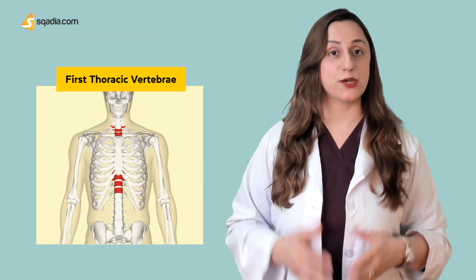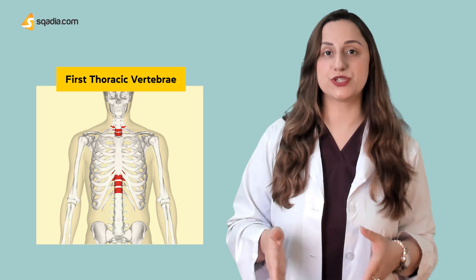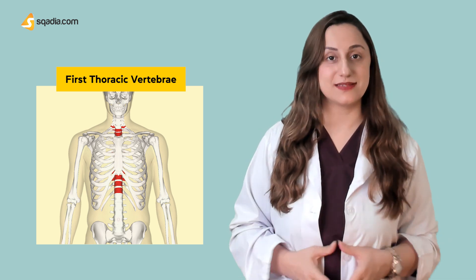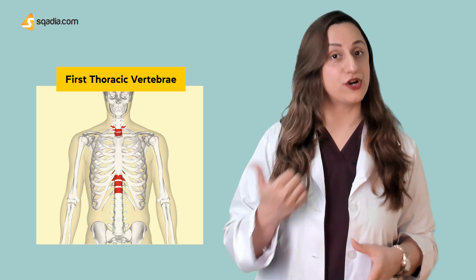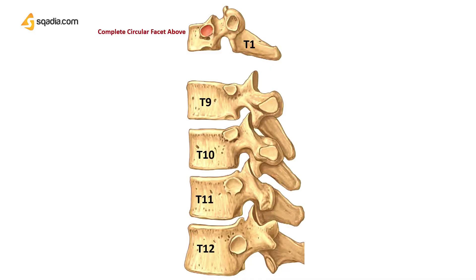Starting with the first thoracic vertebra, as it is closer to the cervical region: the body is not heart-shaped, the superior costal facet on the body is complete as it articulates with the head of the first rib, the inferior costal facet is usually a demi-facet for the second rib, the spine is long and horizontal similar to the cervical region, and a costal facet is present laterally on the first thoracic vertebrae.